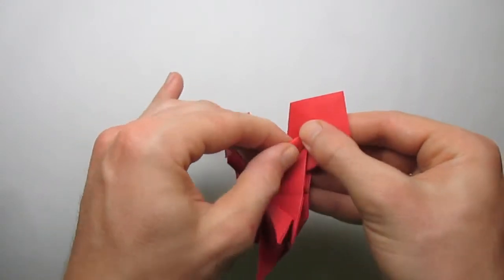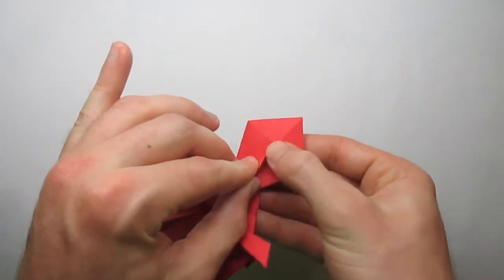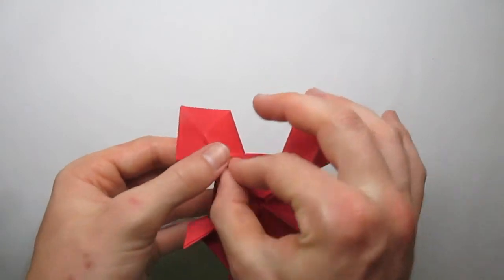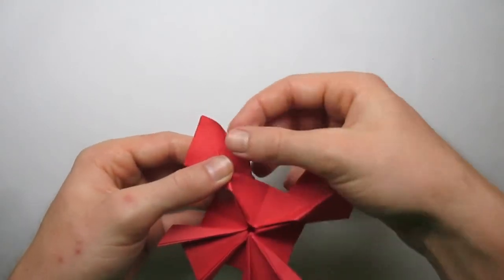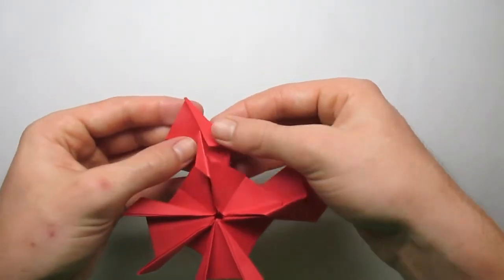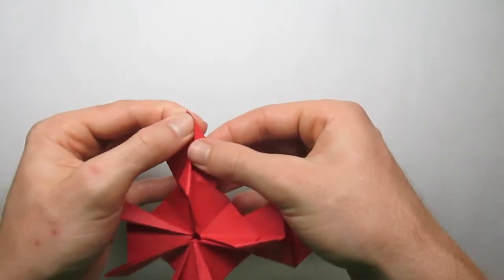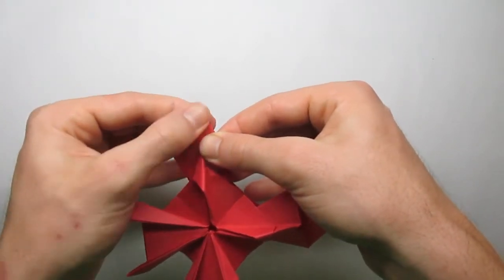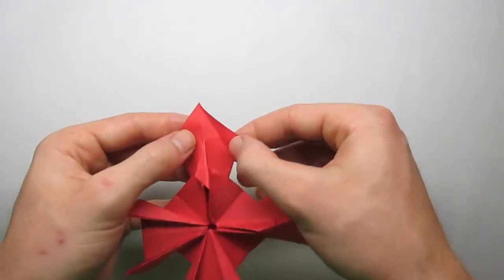Just fold it over like that so it locks the paper together. Now, take this corner and fold it over to the center crease. Unfold it.